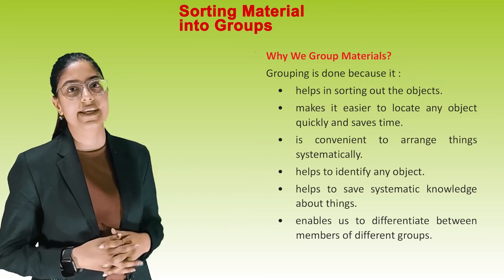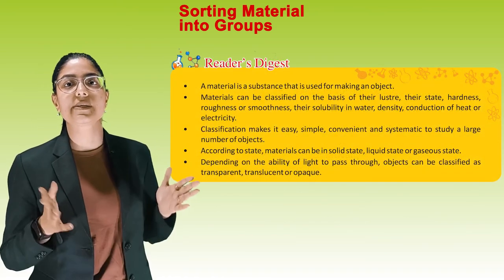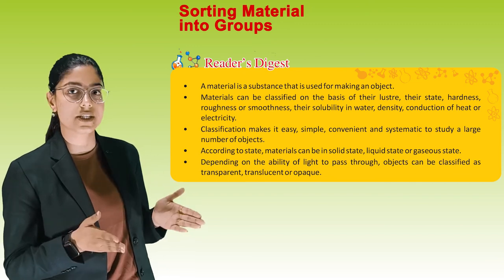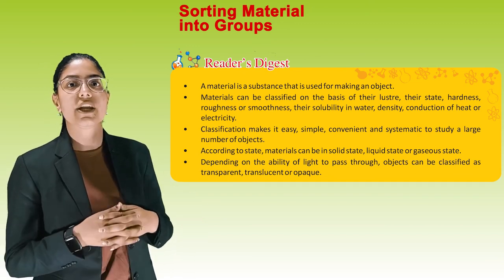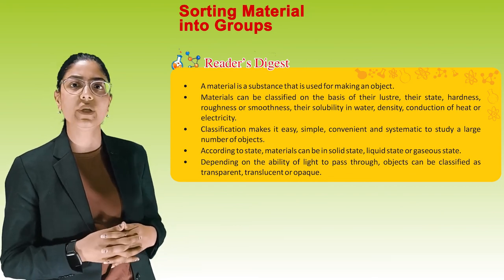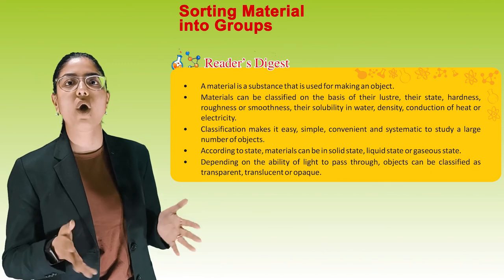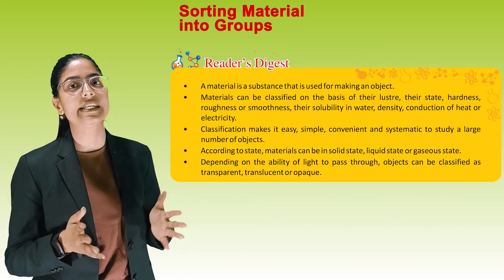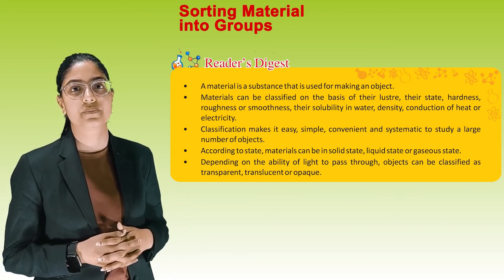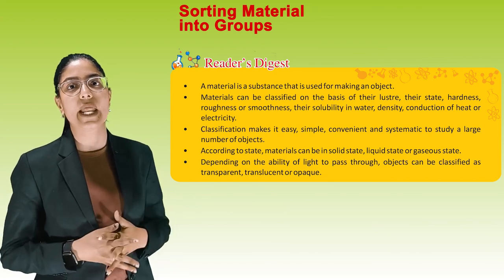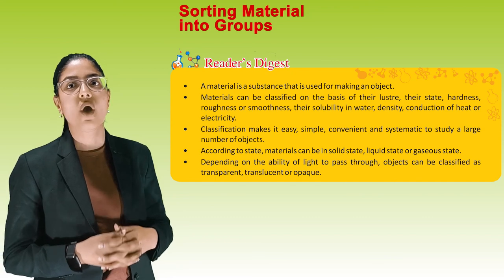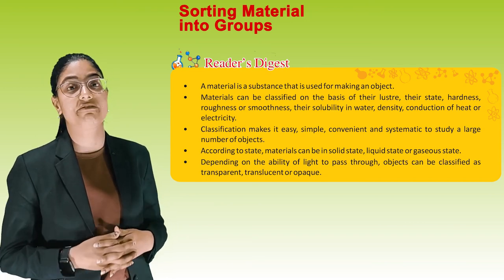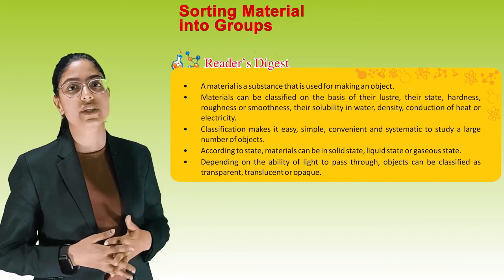Quick revision: a material is a substance that is used for making an object. Materials can be classified on the basis of their luster, state, hardness, roughness or smoothness, solubility in water, density, and conduction of heat or electricity. Classification makes it easy, simple, convenient, and systematic to study a large number of objects. According to state, materials can be in solid, liquid, or gaseous state. Depending on the ability of light to pass through, objects can be classified as transparent, translucent, or opaque.